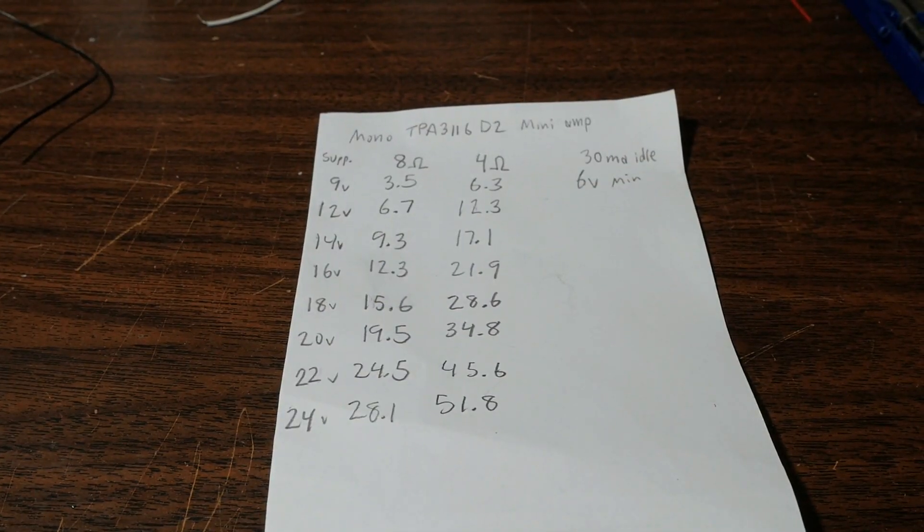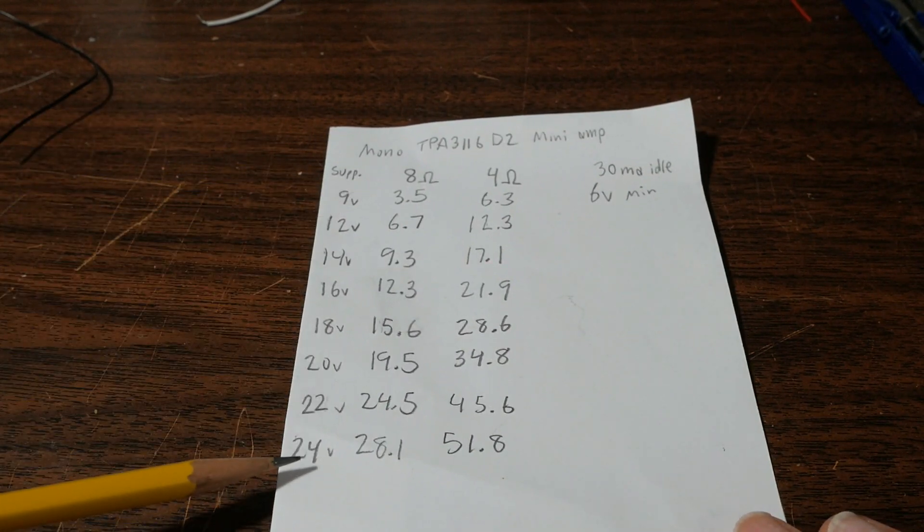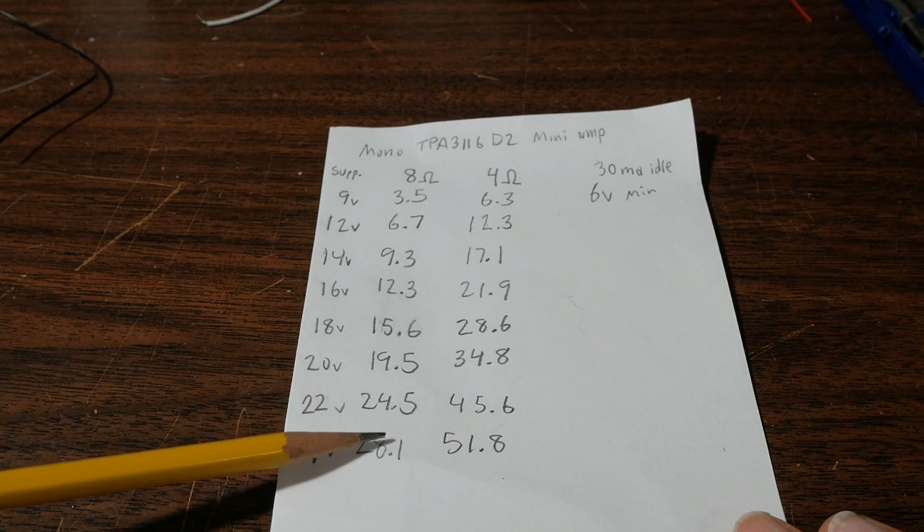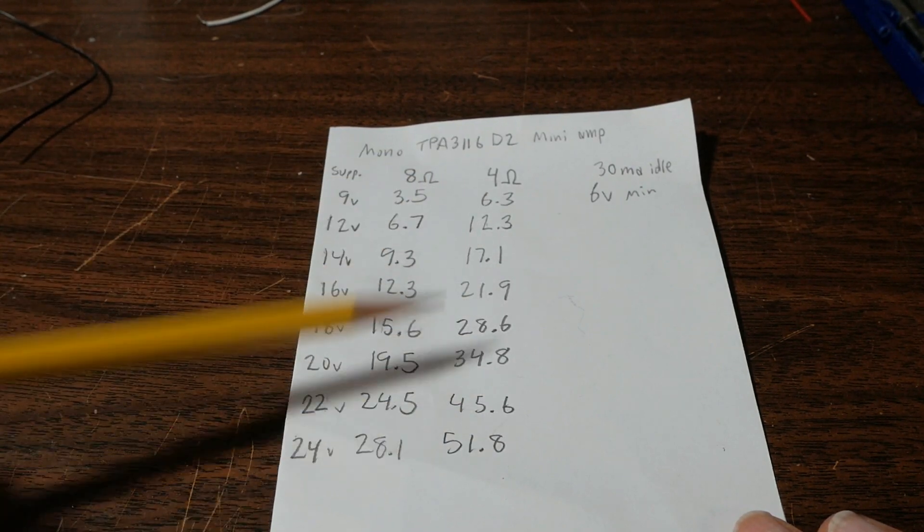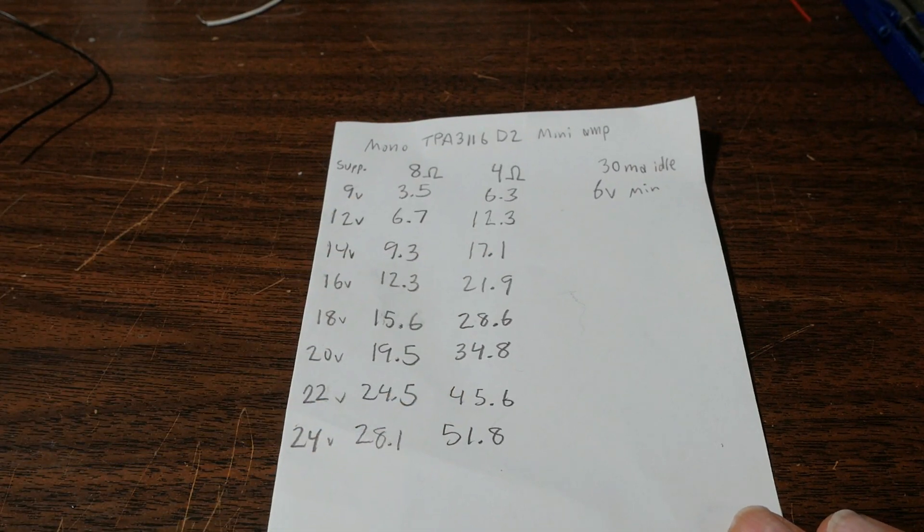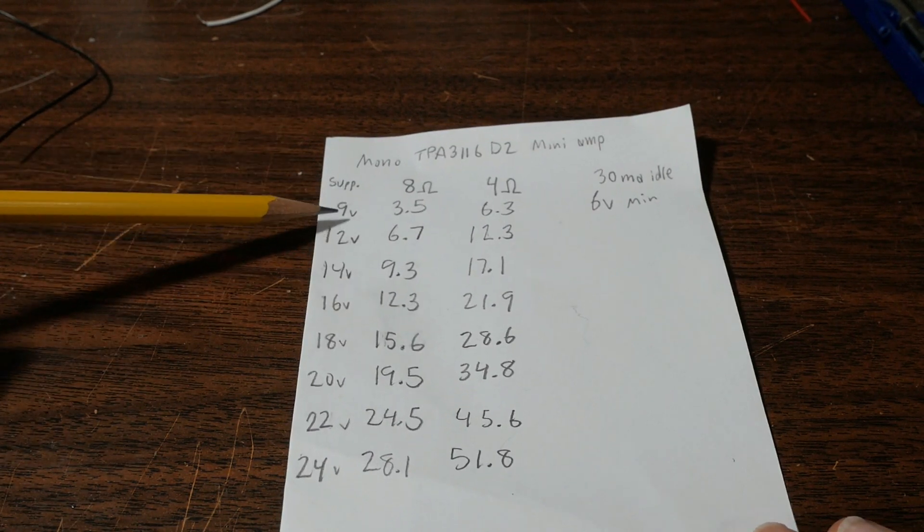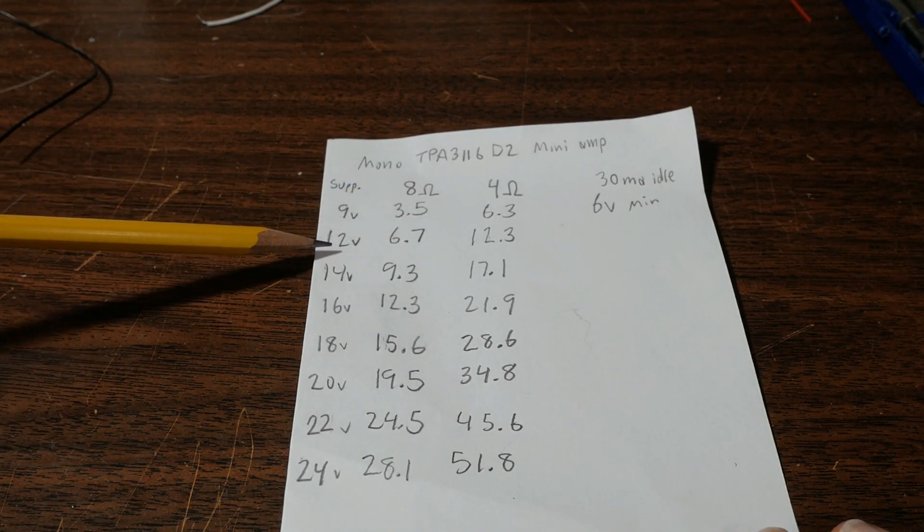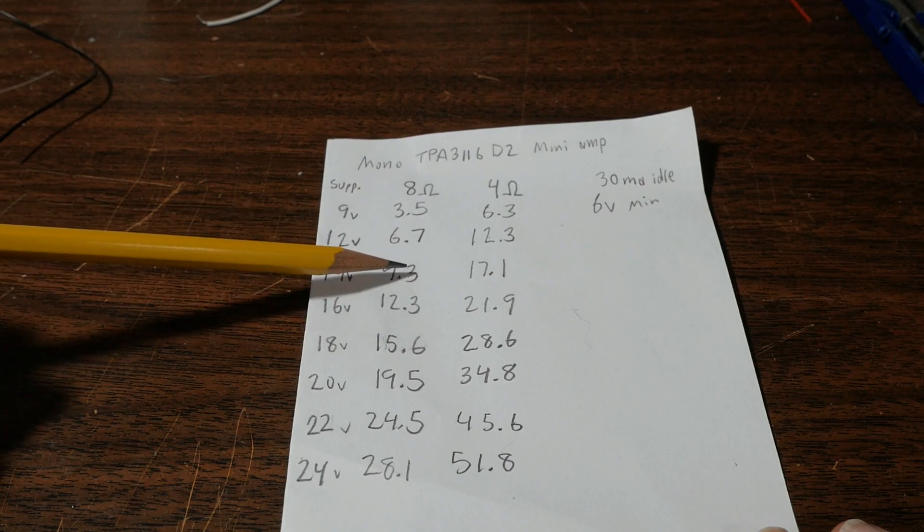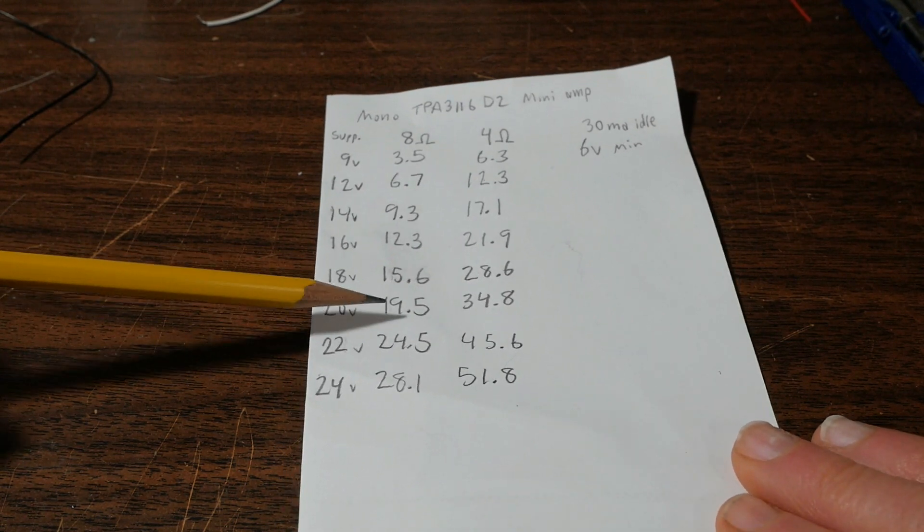Here are the results of the power measurement. This column is the supply voltage, this is the 8 ohm load column, and the 4 ohm load. These show the watts, this is all pre-clipping power, so you know it's a clean signal without any distortion. At a supply voltage of 9 volts at 8 ohms it put out 3.5 watts. 12 volts: 6.7 watts. 14: 9.3. 16: 12.3. 18: 15.6. 20: 19.5. 22: 24.5. 24 volts put out a respectable 28.1 watts.